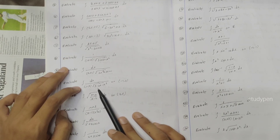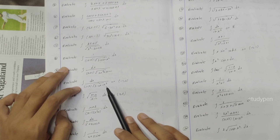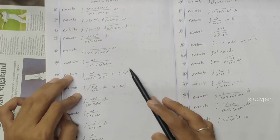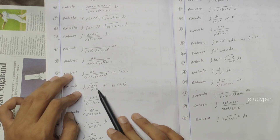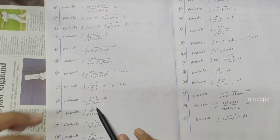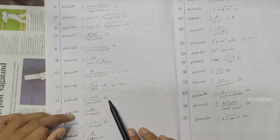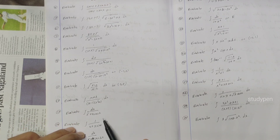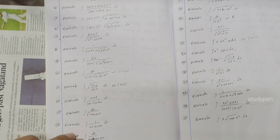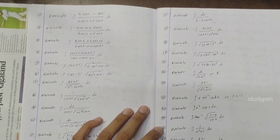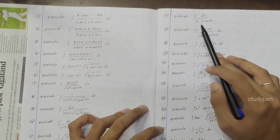Evaluate dx / [(x+1) sqrt(2x² + 3x + 1)]. Integral dx / [(1 - x) sqrt(3 - 2x - x²)] on minus 1 to 3. Integral sqrt[(5 - x) / (x - 2)] dx on (2, 5). Integral (x + 3) / [(x - 1)(x² + 1)] dx. Integral dx / (5 + 4 cos x). Integral 1 / (4 + 5 sin x) dx. Integral dx / (5 + 4 cos 2x). Evaluate integral dx / (2 - 3 cos x).